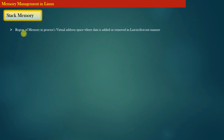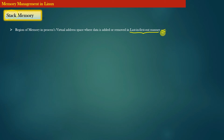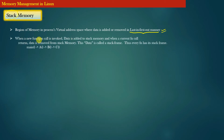The region of memory in a process virtual address space where data is added or removed in last-in first-out manner is the stack memory. Whatever data you add last is the data which will be removed first. When a new function call is invoked, some data is added to the stack memory, and when the current function call returns, the data is removed from the stack memory. This data is called a stack frame, and every function has its own stack frame.